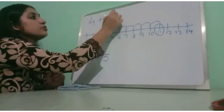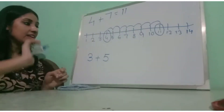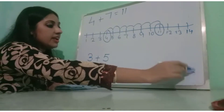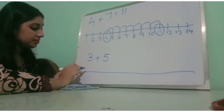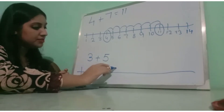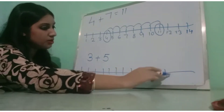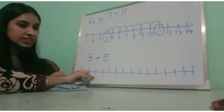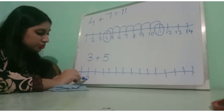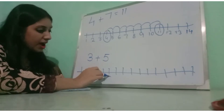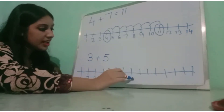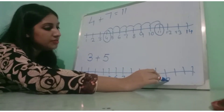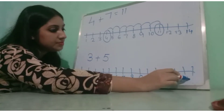So 4 plus 7 equal to 11. ओके, और एक चलो करते हैं। एक और lines draw कर लेते हैं: 1, 2, 3, 4, 5, 6, 7, 8, 9, 10, 11, 12, 13, 14, 15 — 15 lines draw करें। अब इन lines के नीचे digits भी लिख लेते हैं: 1 से 15।